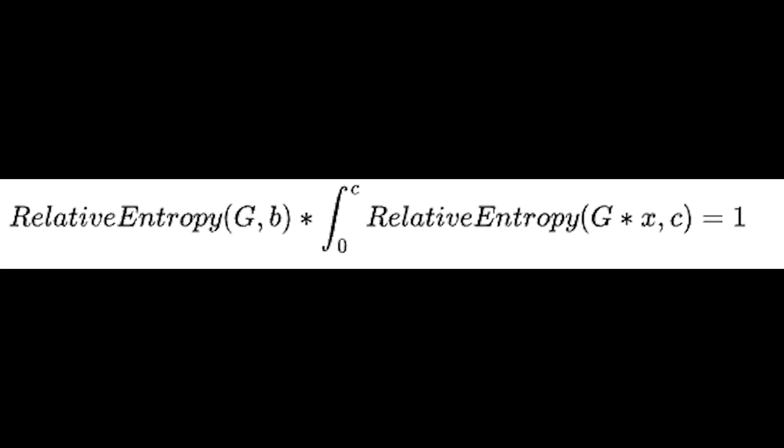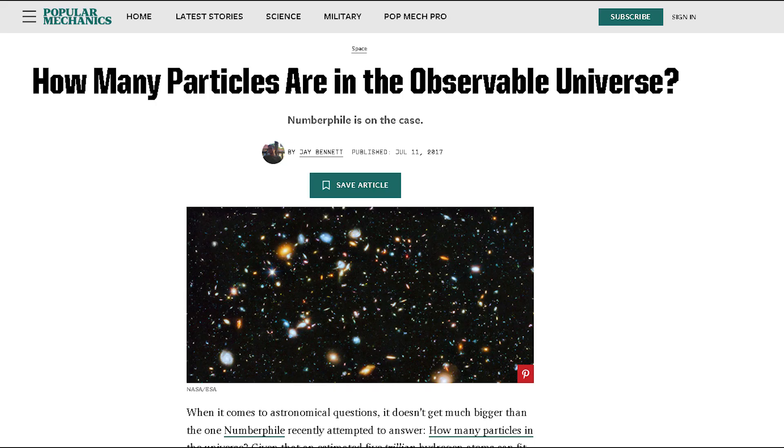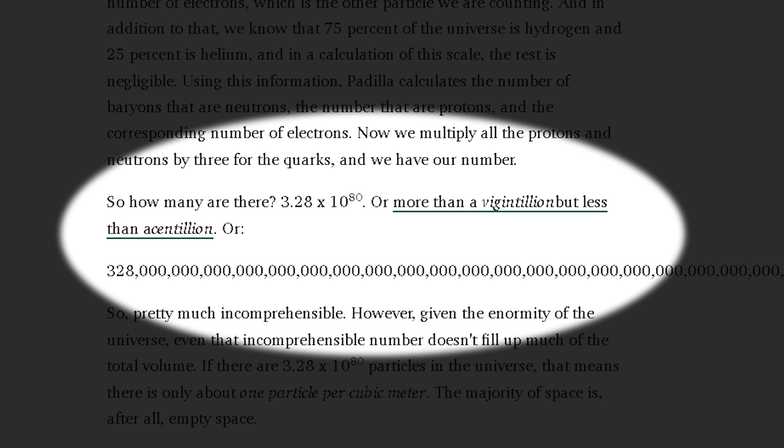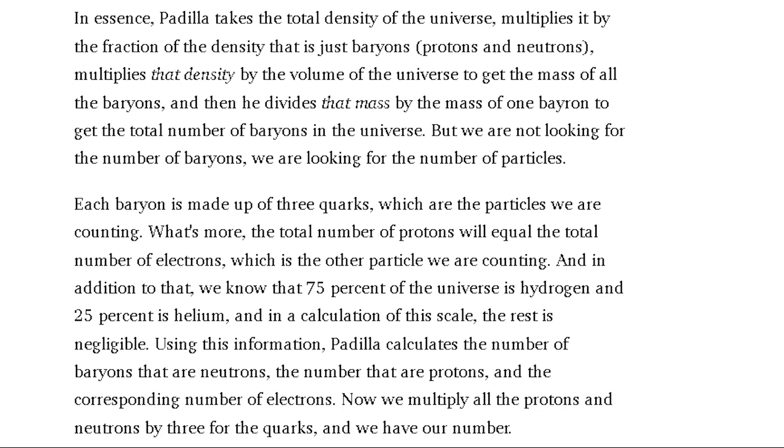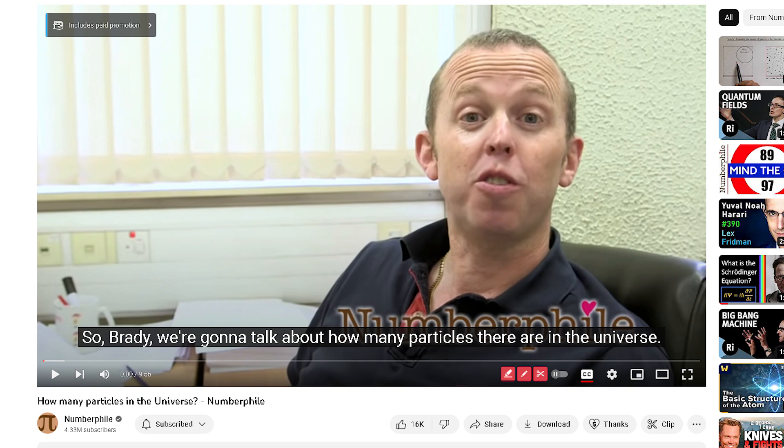The first number, which I call lowercase b, was calculated by Tony Padilla of the University of Nottingham as the number of particles in the universe, found to be 3.28E80 based on the total density of the universe, the fraction of baryons, the volume of the universe, the mass of one baryon, and the ratio from baryons to electrons. There's a great Numberphile video on this linked below.